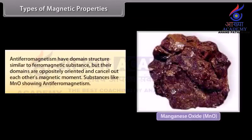Antiferromagnetic substances have a domain structure similar to ferromagnetic substances, but their domains are oppositely oriented and cancel out each other's magnetic moments. MnO is an example of a substance showing antiferromagnetism.